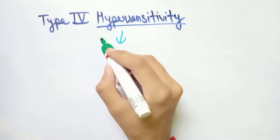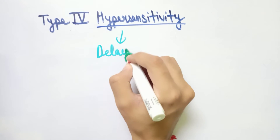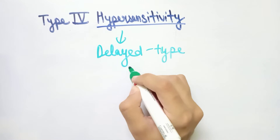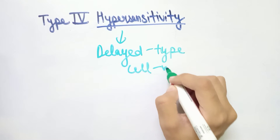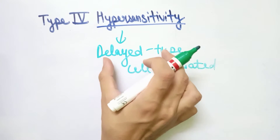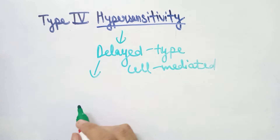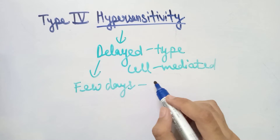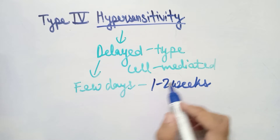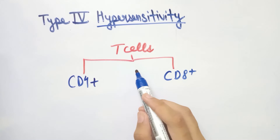Type 4 hypersensitivity is also known as delayed-type cell-mediated hypersensitivity. It is called delayed-type hypersensitivity because this reaction takes a few days to one or two weeks to develop.